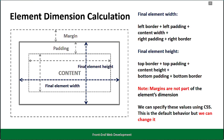Let's calculate the final size of an element through its width and height. When determining the final width, you need to account for several components. The formula for total width is: left border + left padding + content width + right padding + right border. Similarly, the total height is: top border + top padding + content height + bottom padding + bottom border.